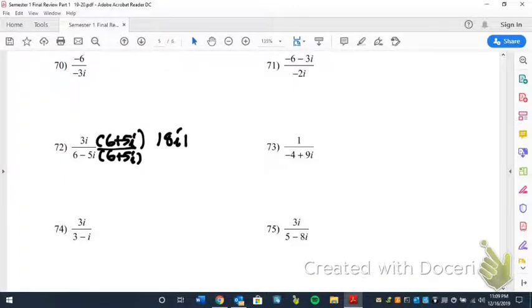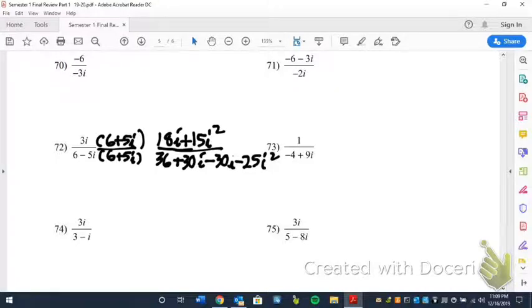So when we distribute here, we get 18i plus 15i squared over, and then this turns into 36 plus 30i minus 30i minus 25i squared. Now why we do this, as you can see, is we now cancel out the 30s.